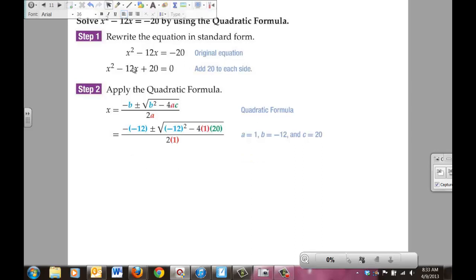Now you can see we took our b value of -12, plugged it in the two places for b. We took our a value of 1 and put it in for the two a spots. And we put our c value of 20 in for the c spot. From there, you're going to do your math. Your 4 times 1 times 20 gave you 80, and your -12 squared gave you 144.